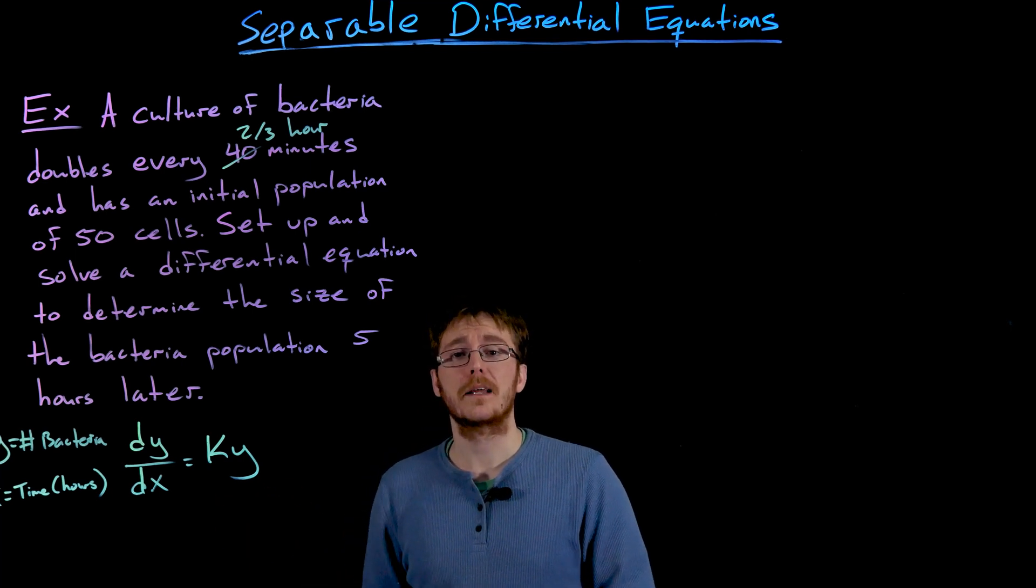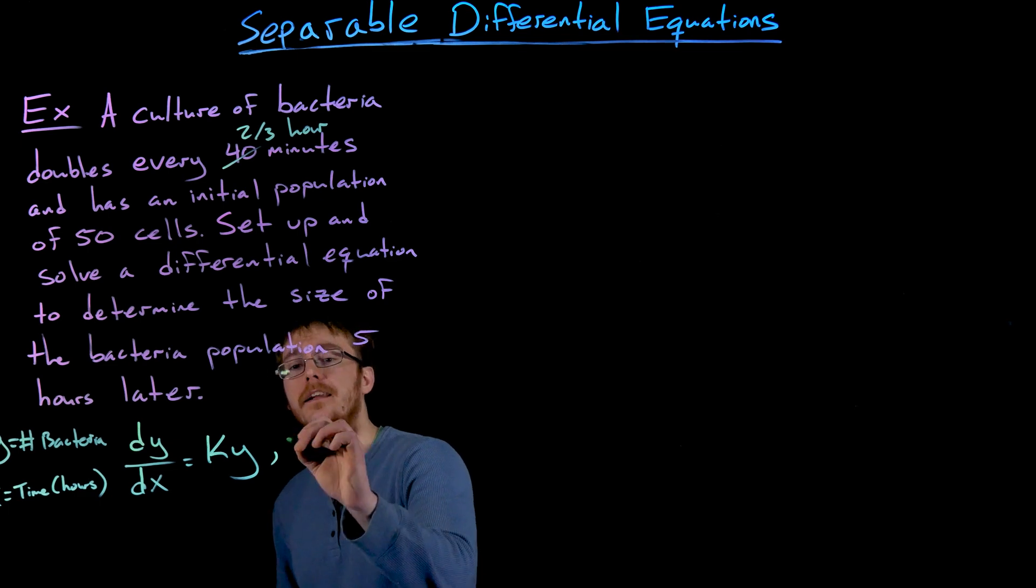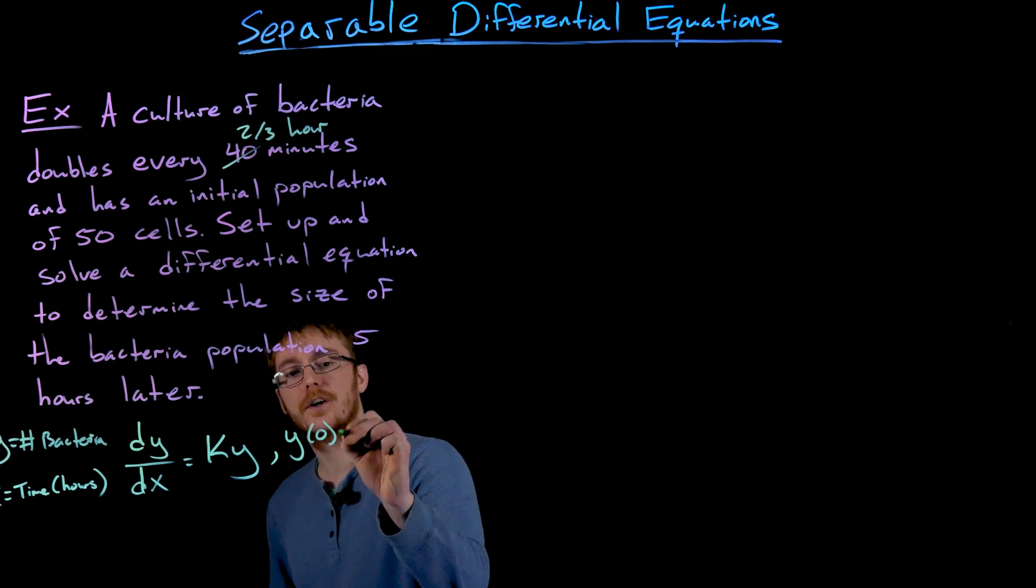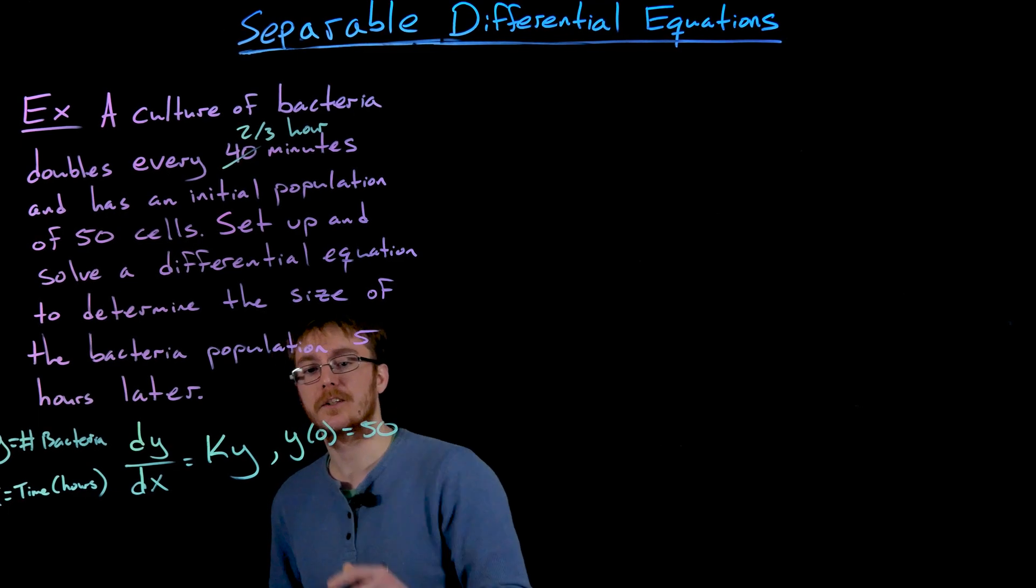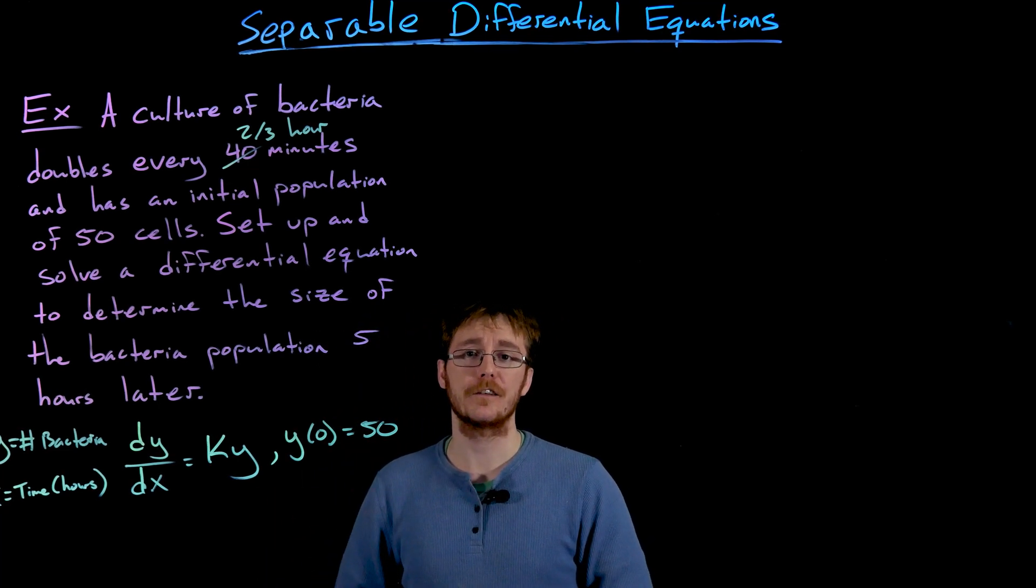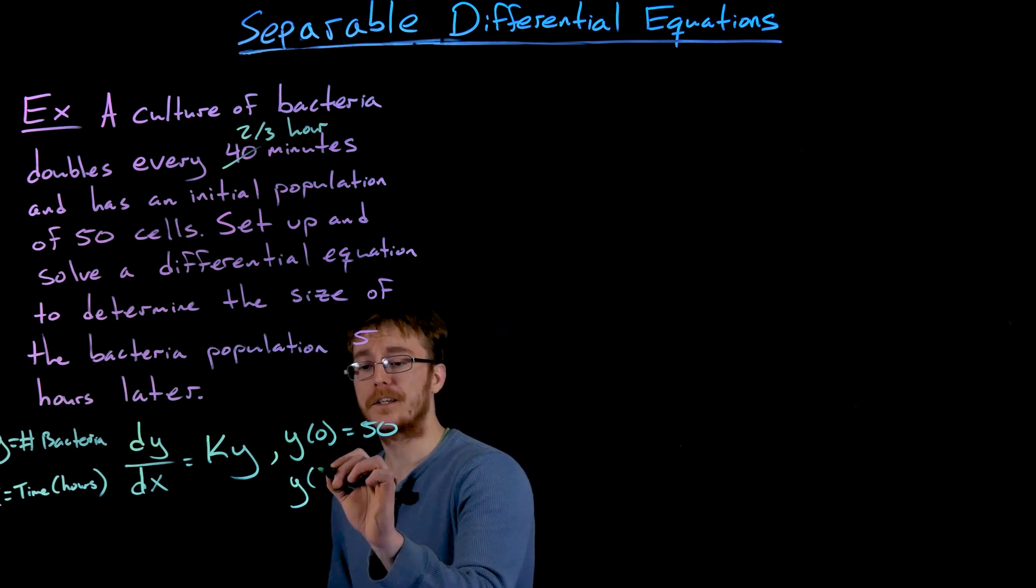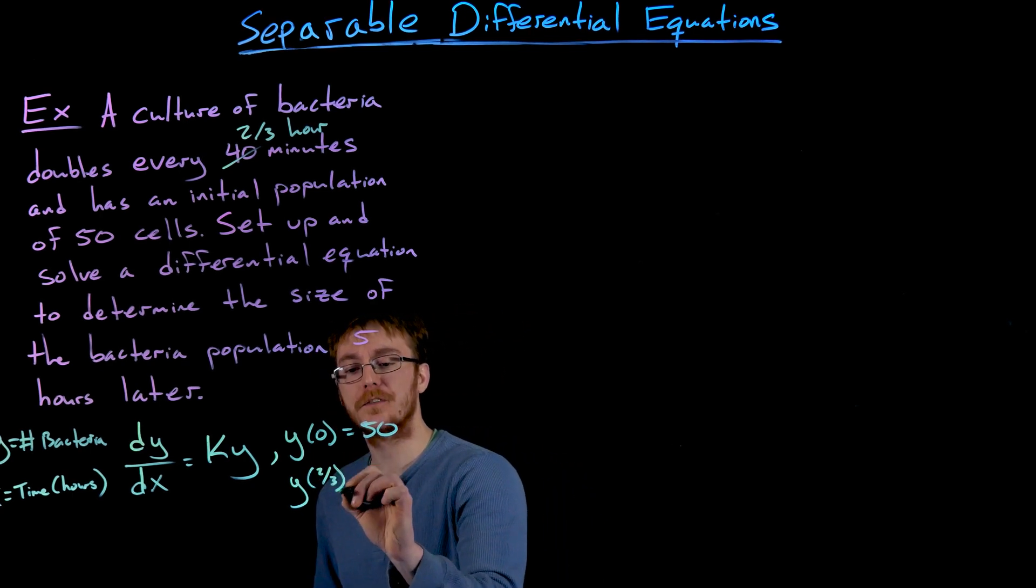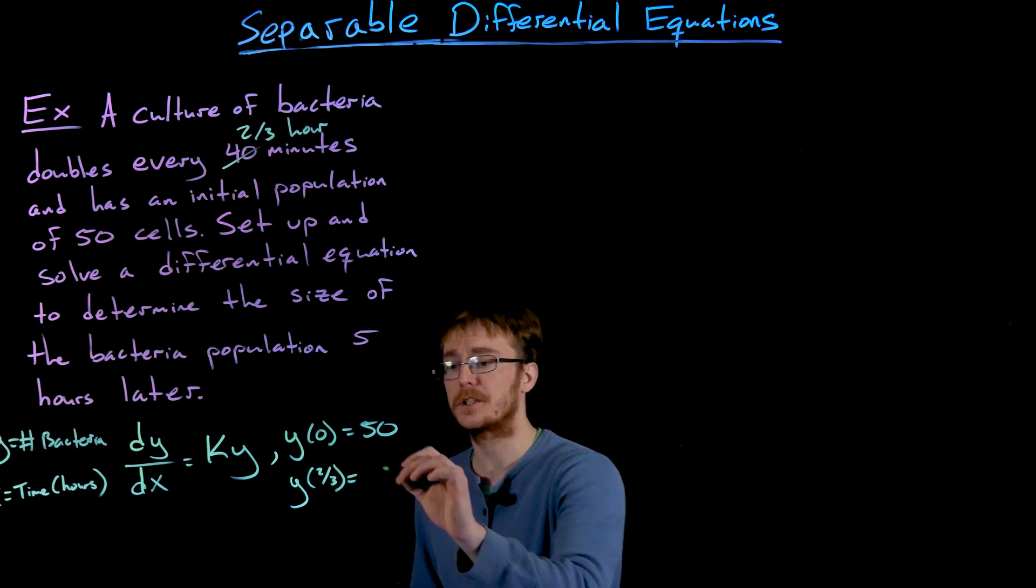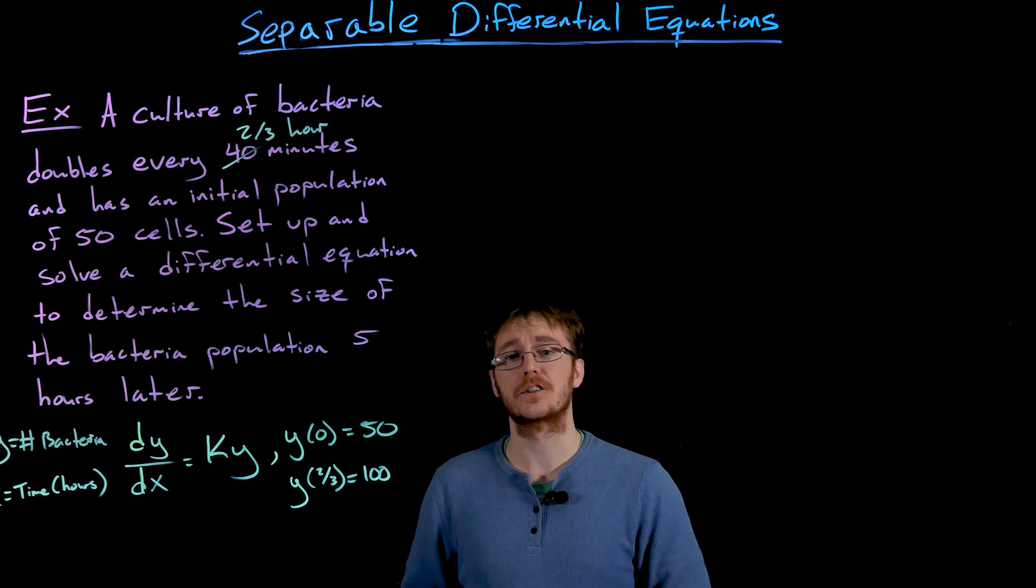So now we have our differential equation set up. We also know the initial condition here is that y of 0 is equal to 50 because when x is equal to 0 or at this initial time, we have 50 bacteria in the population. What we also know that might be helpful here is that after two-thirds of an hour or 40 minutes, the population is going to double, and that'll give us 100 bacteria in this culture.